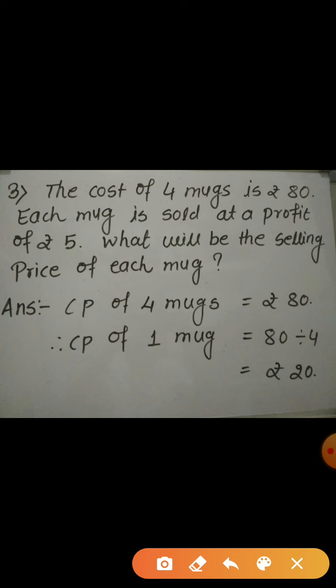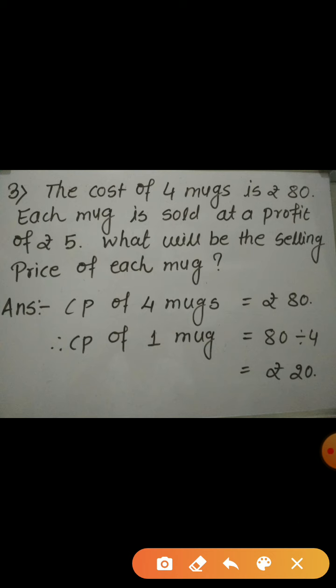In this question, we are asked to find out the selling price of each mug — that is, the selling price of 1 mug. To find the selling price of 1 mug, we should know the cost price of 1 mug and the profit on 1 mug. The profit on 1 mug is given to us, which is Rs. 5. But we don't know the cost price of 1 mug, because we are given the cost price of 4 mugs. So first, we have to find out the cost price of 1 mug.